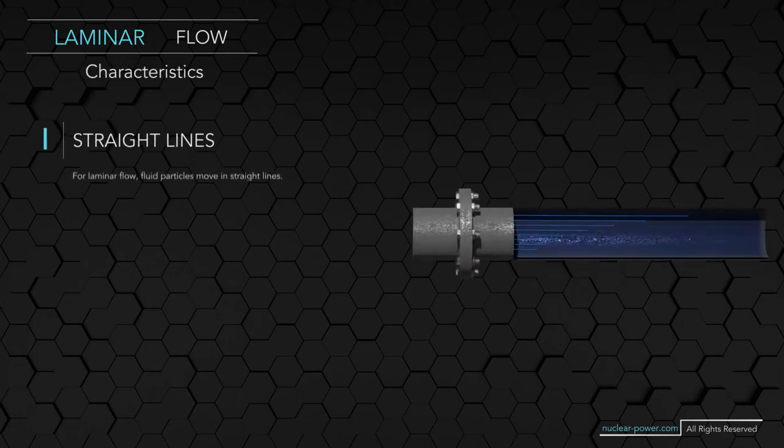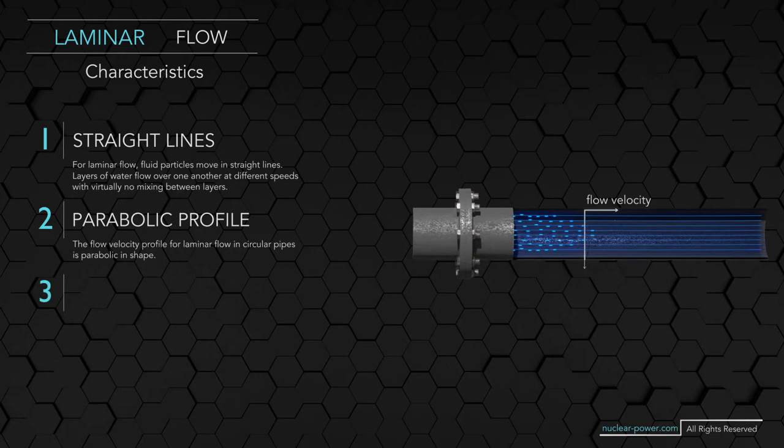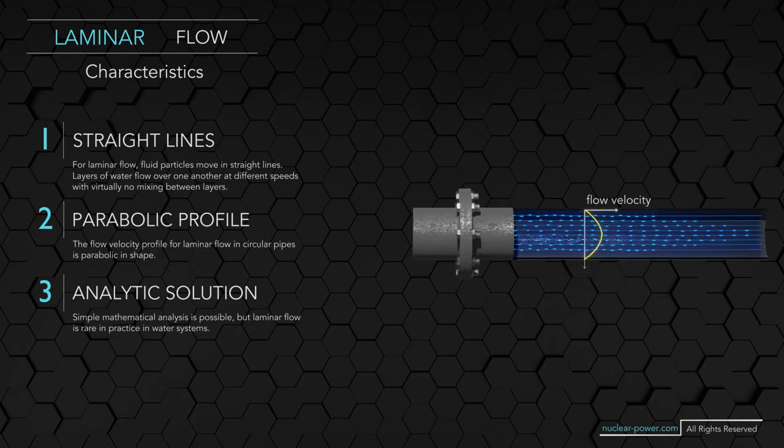Laminar flow is characterized by smooth or regular paths of particles where fluid particles move in straight lines. This is in contrast to turbulent flow, which is characterized by irregular movement of particles. The fluid flows in parallel layers with minimal lateral mixing, with no disruption between the layers. There are no cross currents perpendicular to the direction of flow, nor eddies or swirls of fluids.